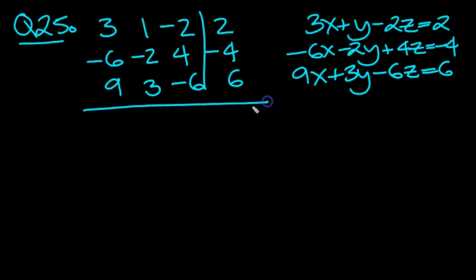See what we do here. So let's write out the first row first. 3, 1, minus 2, 2.